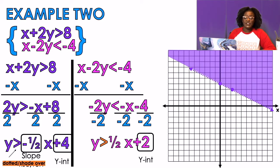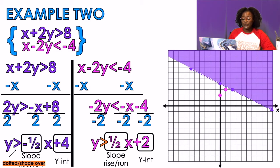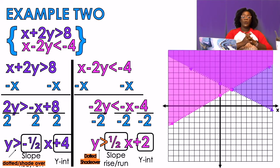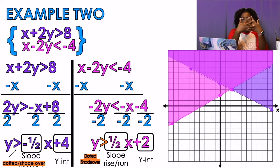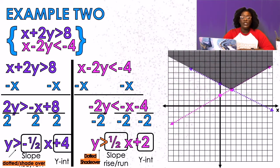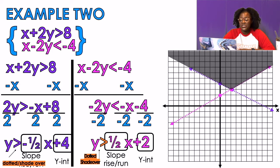Moving on to graphing: my y-intercept is 2, and my slope is positive ½, so I rise up one and run over two. My symbol says greater than with no equal to, so it's a dotted line and I shade over. For inequalities, the solution set is where the two colors meet — the black area where purple and pink cross. I remove the extra shading so we can clearly see the solution set.